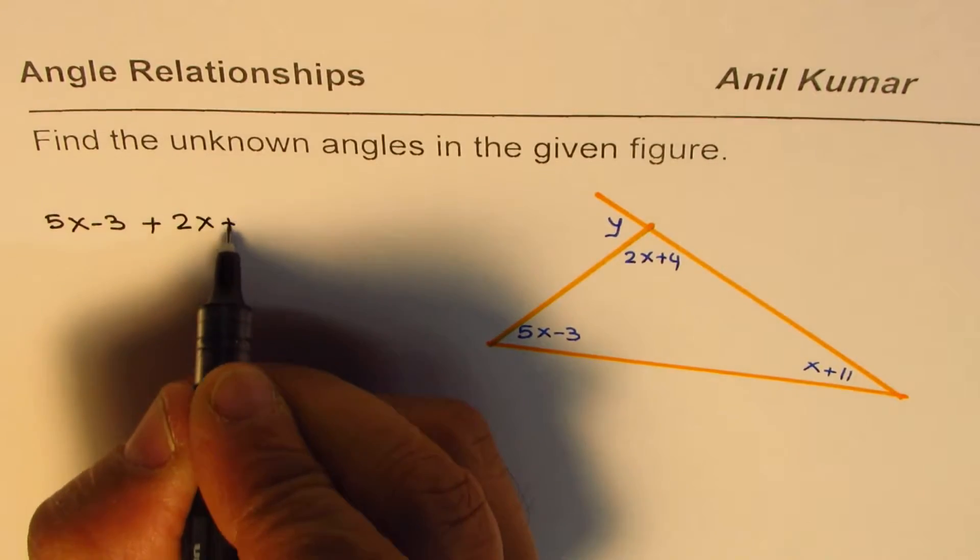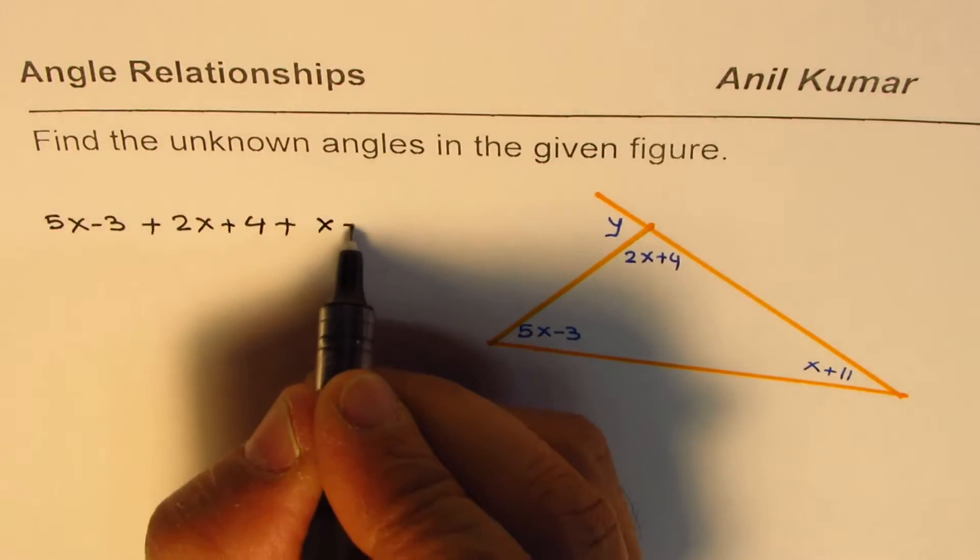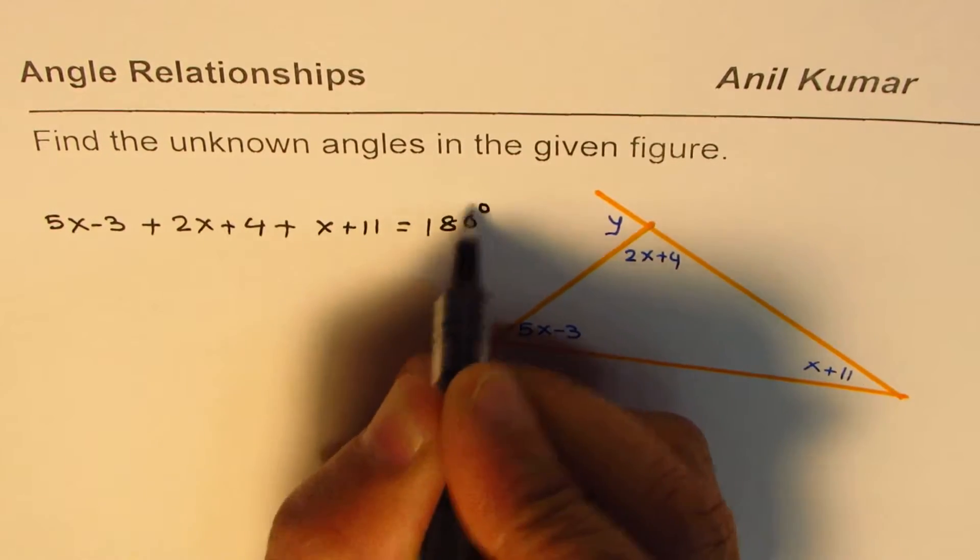plus the other angle, which is 2x plus 4, plus the third angle, which is x plus 11, equals to 180 degrees.